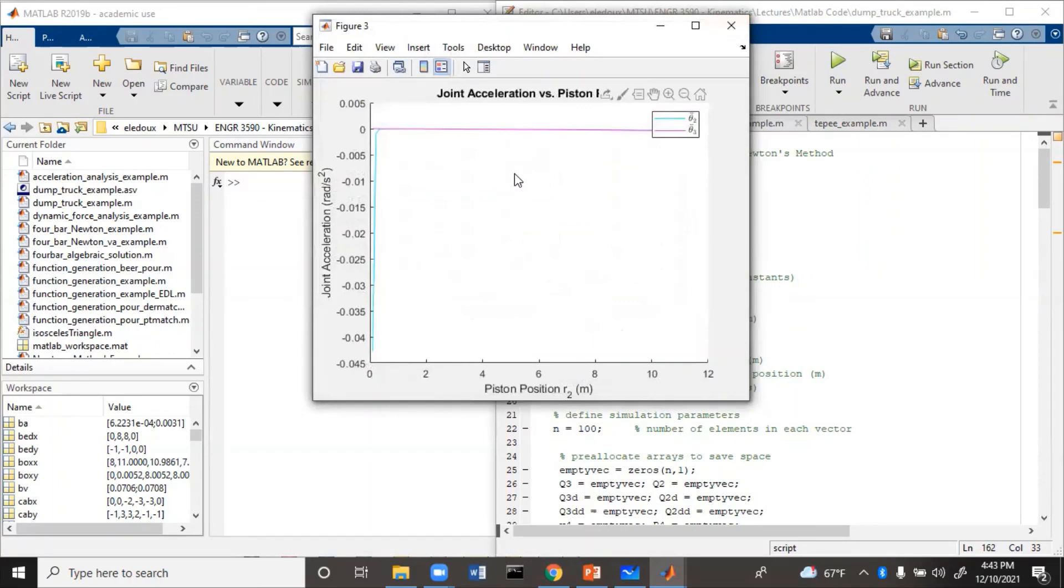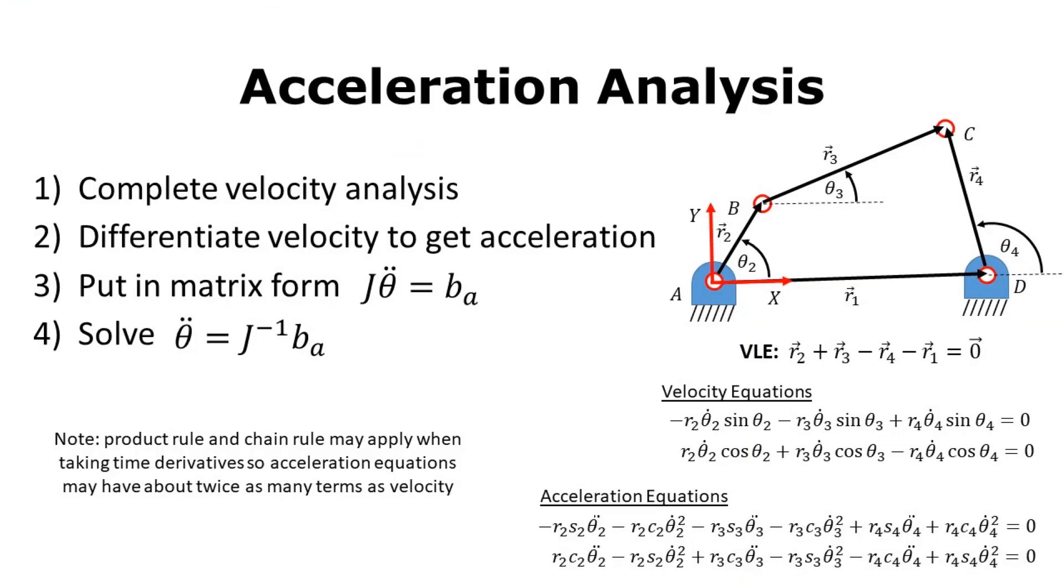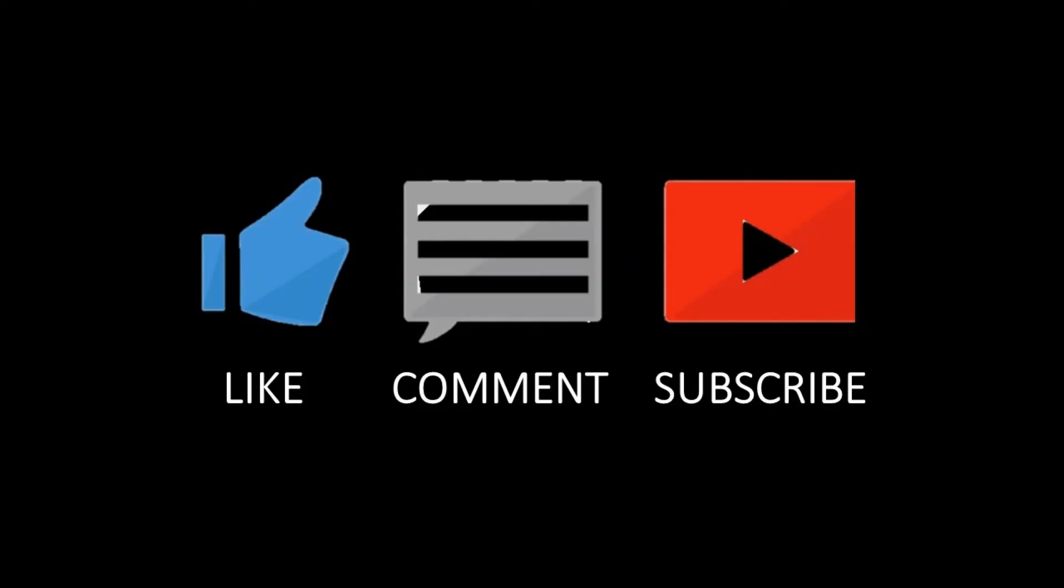Here, joint acceleration versus piston position. You can see the blue is theta 2 double dot, the magenta is theta 3 double dot. And you see the spike here. This is because of the singularity at the very beginning, when it first starts out and it's completely folded onto itself. You see the spike here because of where the...